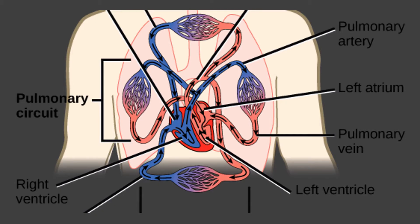Differences between arteries and veins: arteries carry oxygenated blood away from the heart, except the pulmonary artery. They lie mostly deep in the body and are thick-walled and highly muscular. Valves are not present in arteries. They are reddish in color, blood moves with pressure, arteries empty at the time of death, and if the arterial wall is injured, blood comes out forcefully in a large area.